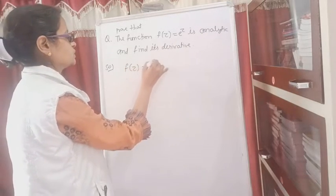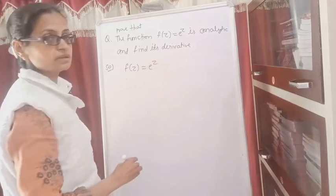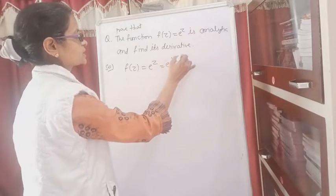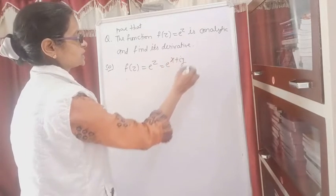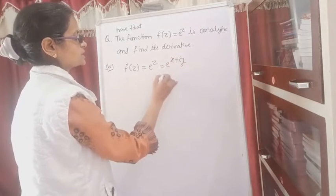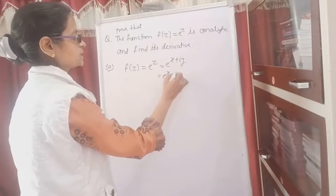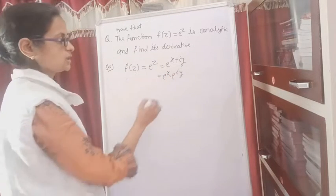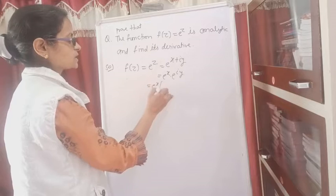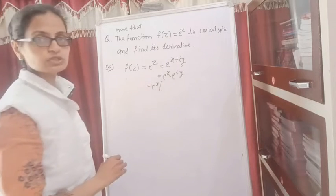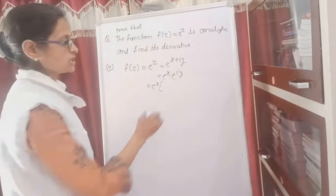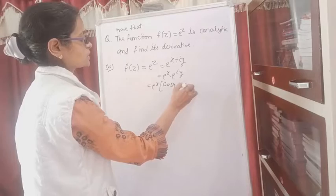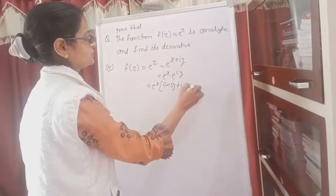f(z) equals e to the power z. For z, we will write e to the power x plus i·y. We will separate them: e to the power x and e to the power i·y. For e to the power i·y, we write cos y plus i sin y, using Euler's formula.